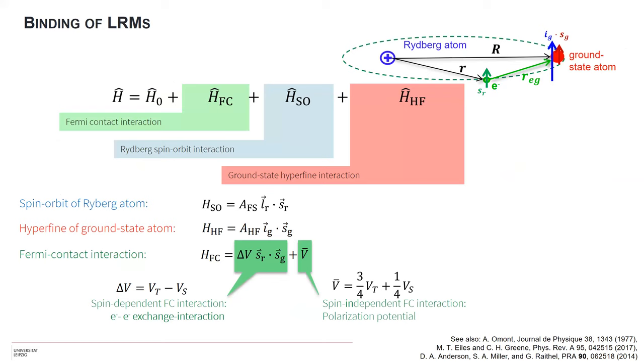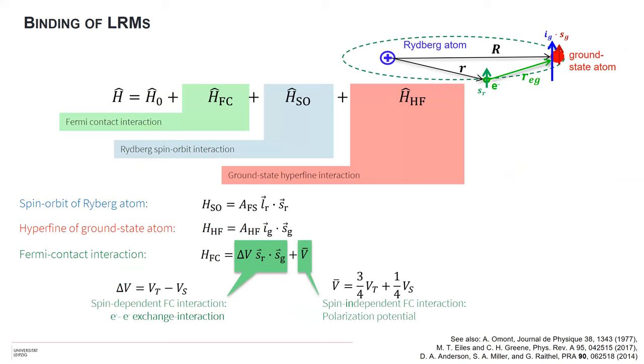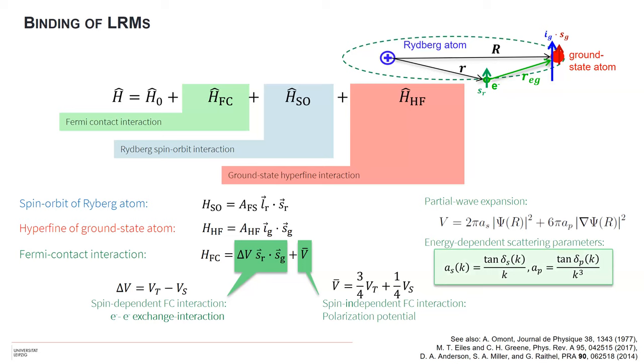This is the Hamiltonian that we use to model the system, an earlier version proposed by Matt and Chris Greene. The contributions are roughly ordered by their magnitude: we have the Fermi contact interaction which turns out to be the smallest energy scale where we work, then the Rydberg spin-orbit interaction. Very surprisingly, the hyperfine interaction of the ground state atom is the largest energy scale. All the physics is in here because quantum defects, hyperfine splittings, fine structure and so on we can measure very well. All the relevant information about the binding is in these scattering phase shifts.